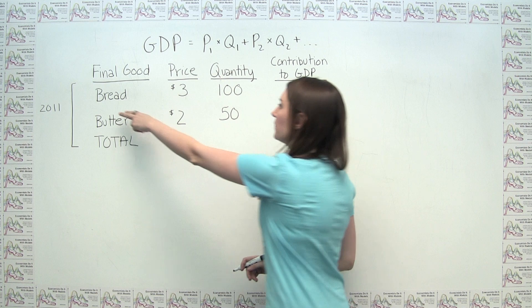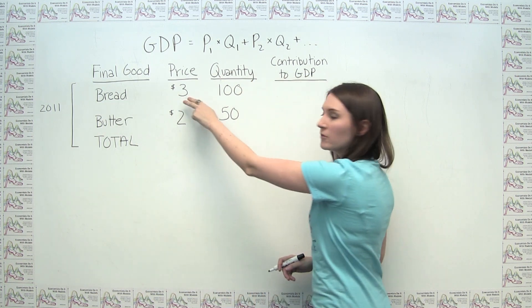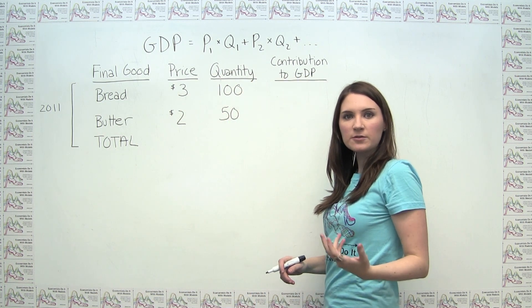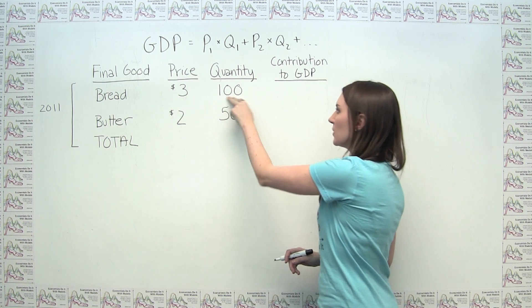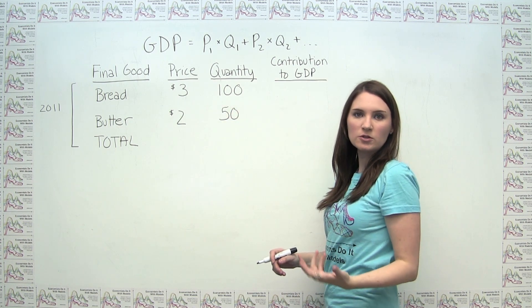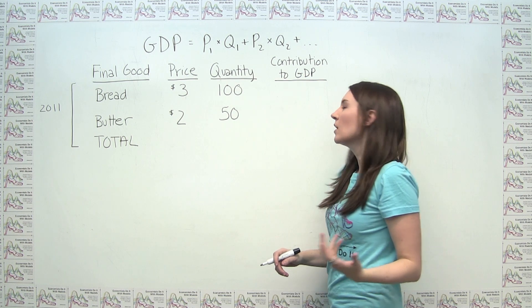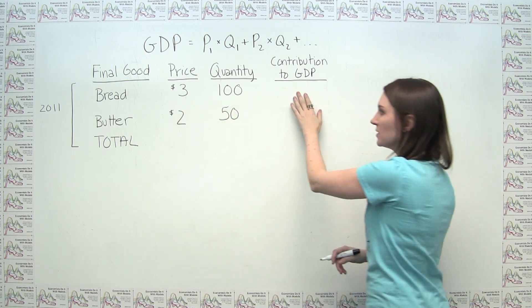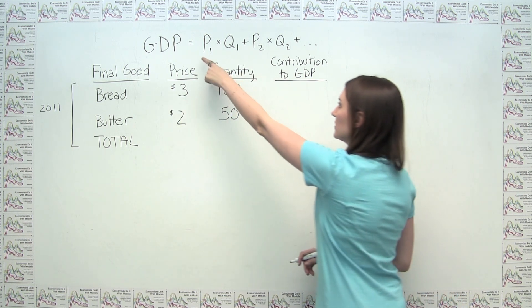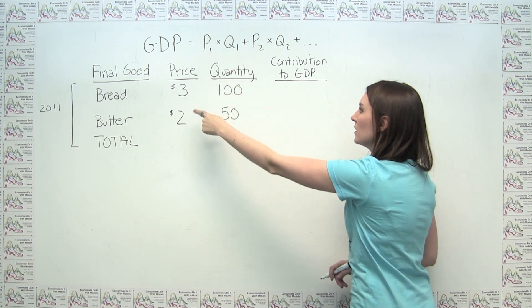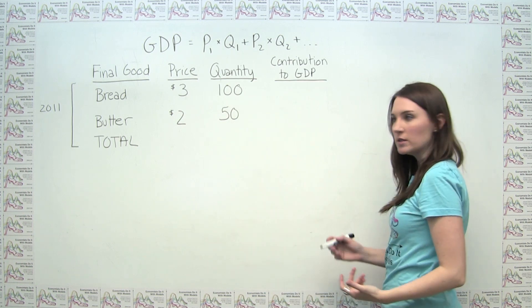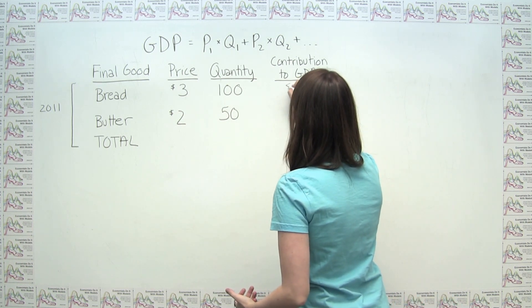So here, if we're saying that each loaf of bread sells for a price of $3 in the market, and this economy is transacting 100 loaves of bread, then bread's contribution to GDP is just the price of bread times the quantity of bread, in this case $3 times 100, or $300.